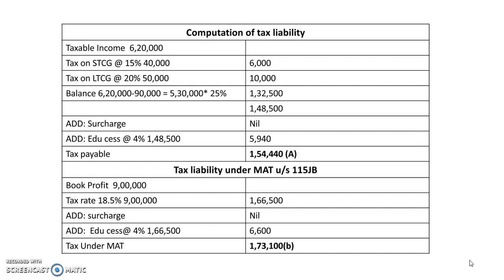Now we compute the tax liability under the normal method. The taxable income is 6 lakh 20,000. There are no winnings, so the 30% rate does not apply. For short-term capital gain of 40,000, we apply 15%, giving tax of 6,000. For long-term capital gain of 50,000, we apply 20%, giving tax of 10,000. There is no other casual income.